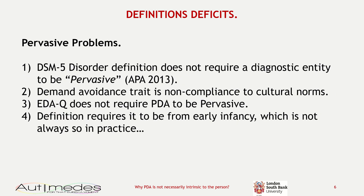Starting with issues with the pervasive definition: the DSM-5 actually has a definition for what a disorder is, and it does not require disorders to be pervasive. Also, the demand avoidance in PDA is primarily about non-compliance to cultural norms and particularly non-compliance with ordinary demands from other people. Most of our empirical research on PDA is done with the Extreme Demand Avoidance Questionnaire (EDAQ), and the EDAQ itself does not require demand avoidance to be pervasive. That matters because if you want to generalise research results from the EDAQ, you can't assume that PDA is pervasive.